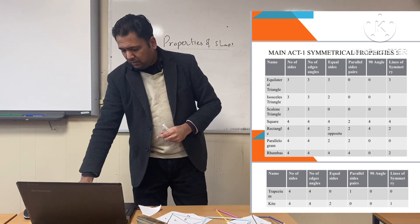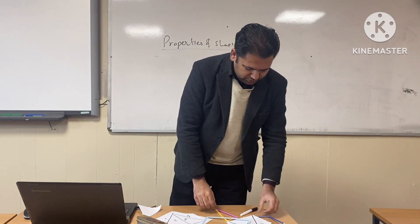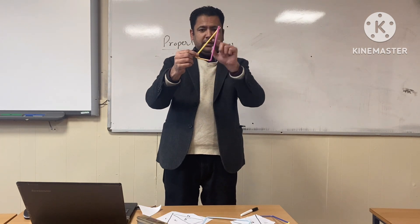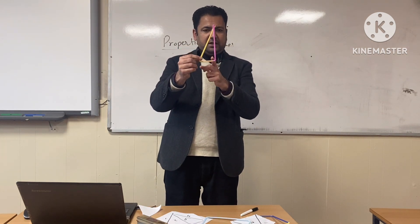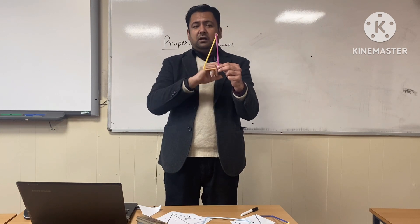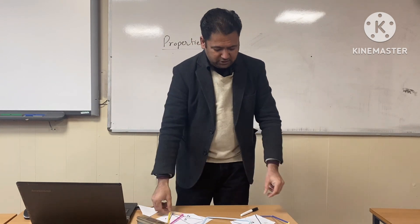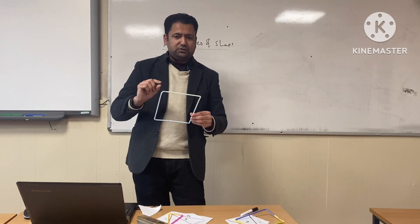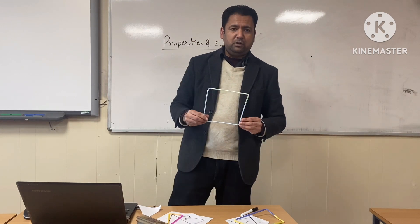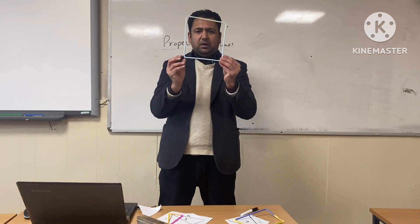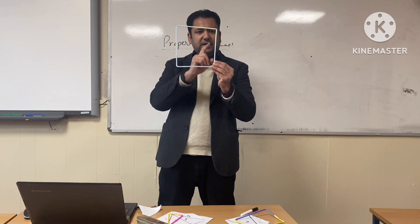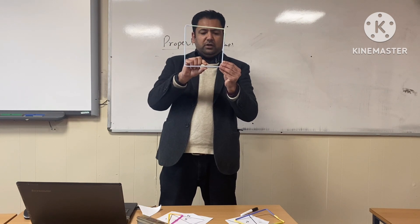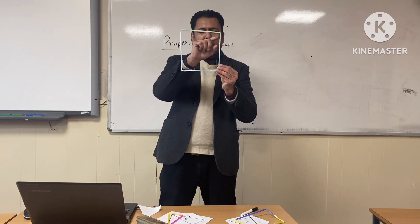Most students are confused about the triangle. A right angle triangle has one angle equal to 90 degrees — that is the only possibility for the 90-degree angle. Most students are also confused about square versus rhombus, and rectangle versus parallelogram. Let's be clear about that. This is a square — how many corners? Four. How many sides? Four. The properties of the square: all sides are equal, and each angle is equal to 90 degrees.